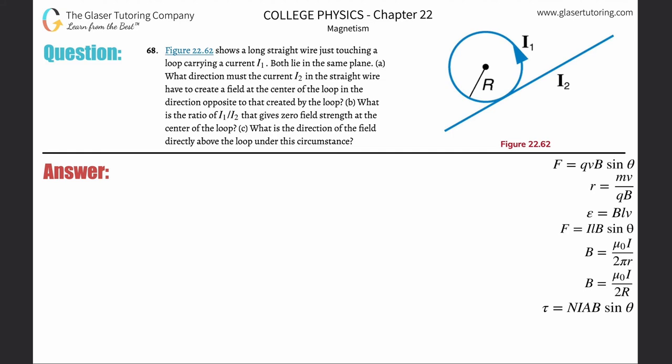Number 68. Figure 22.62 shows a long straight wire just touching a loop carrying a current I sub 1. Both lie in the same plane. Part A: What direction must the current I2 in the straight wire have to create a field at the center of the loop in the direction opposite to that created by the loop?